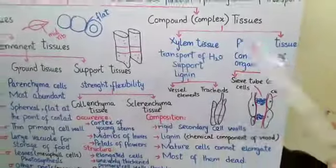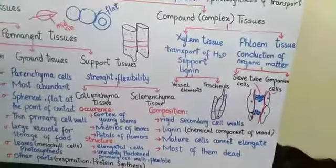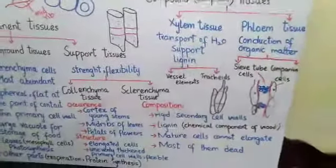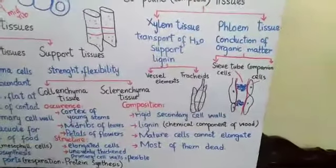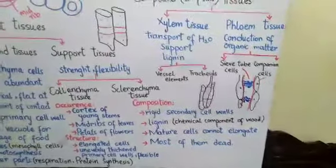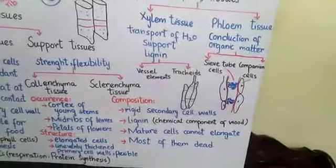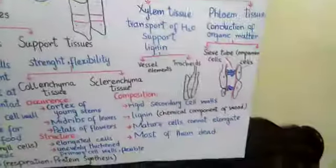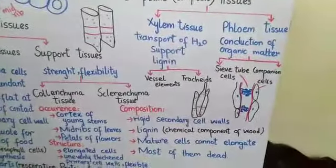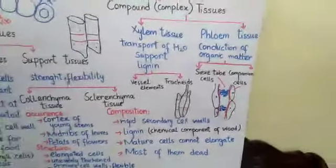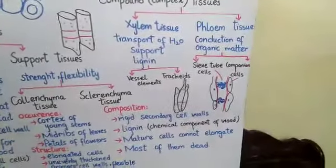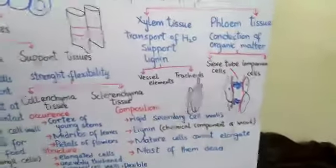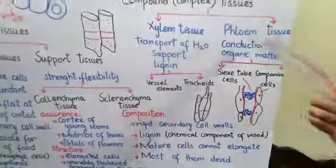We call it compound tissue because these are more than one type of cells. Compound tissue is further divided into two types: xylem tissue and phloem tissue. Xylem tissue and phloem tissue are found only in vascular plants, such as eucalyptus, herbs, and mints. In these plants, we need to transport materials and food, and to do so we have xylem tissue and phloem tissue.